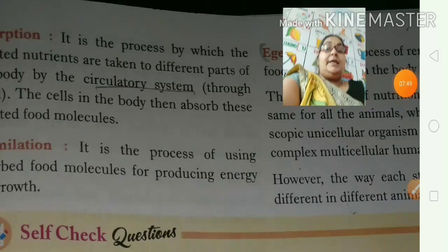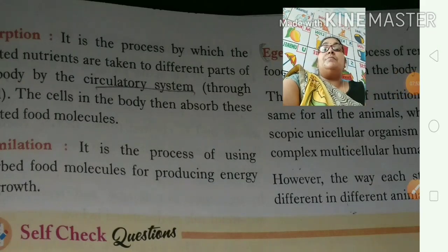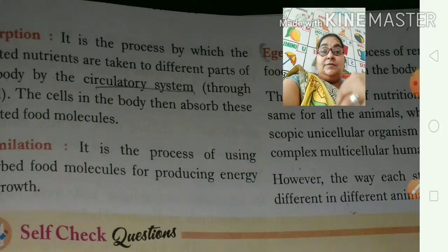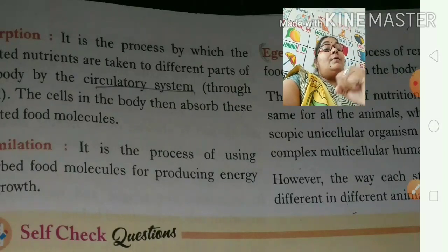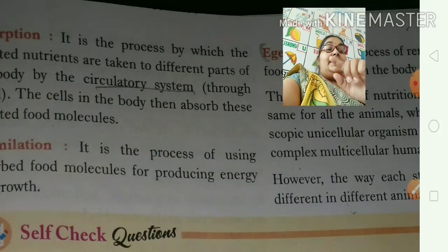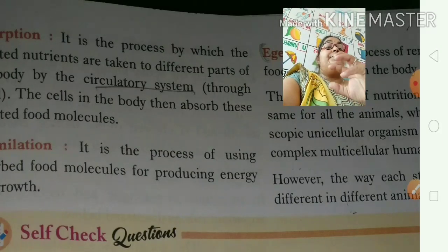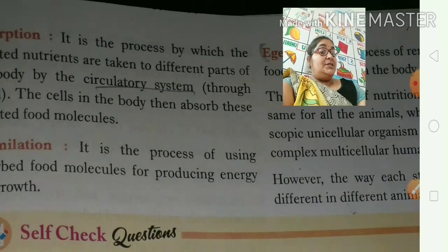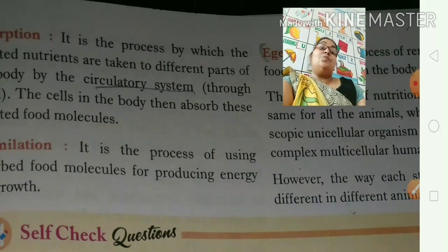The next step is assimilation. Assimilation is the process of using the absorbed food molecules for producing energy and growth. So to recap the sequence: first is ingestion — we take in food; then digestion — the soluble nutrients are converted; then absorption — nutrients are transferred through the body via the circulatory system through blood; and the cells in the body absorb these digested food molecules so that we can work properly.